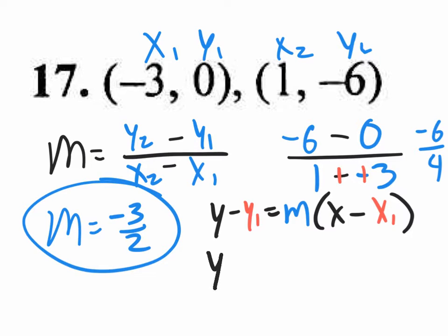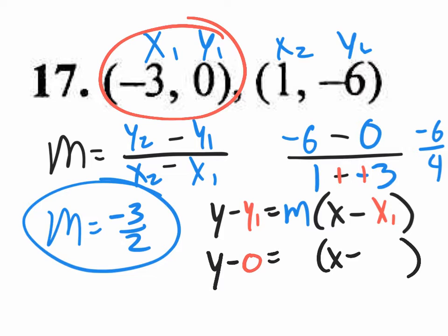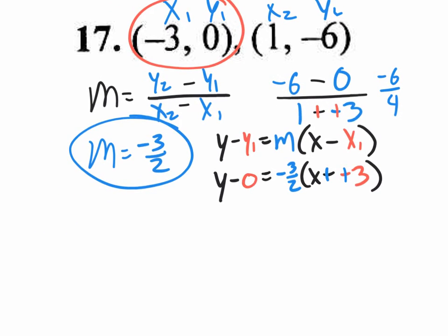So when you do this, use blank spots: y minus blank spot equals blank spot times x minus blank spot. And you could use the x1, y1. Sure, why not? Let's use that one. The y1 is 0. The m value is negative 3 halves. Because we did the slope formula, we found out it was negative 3 halves. And the x1 value is negative 3. The minus minus changes to plus plus. So this is our point slope form equation, but that's not the answer because the instructions or the answer on the back of this particular worksheet is in slope-intercept form. So we need to change this point slope to slope-intercept.